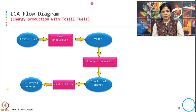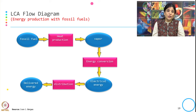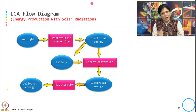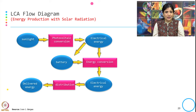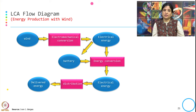This is energy production with fossil fuel: from fossil fuel, heat production, vapour, energy conversion, electrical energy distribution, and delivered energy. This energy flow diagram is from Ivan J. Baizas's presentation on LCA analysis of different energy sources. Similarly, energy production with solar radiation goes from sunlight through photovoltaic conversion, electrical energy, battery, energy conversion, electrical energy distribution, and delivered energy. Wind energy also has its own process flow to arrive at the final energy source.